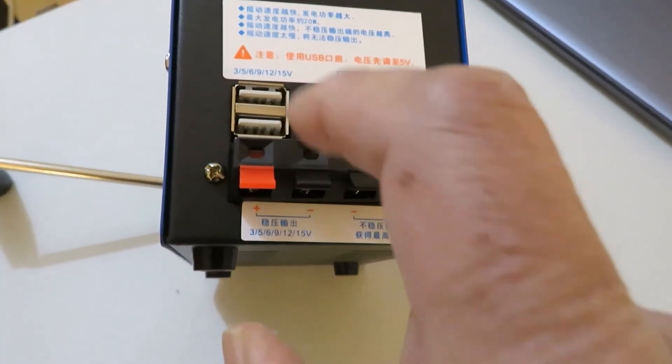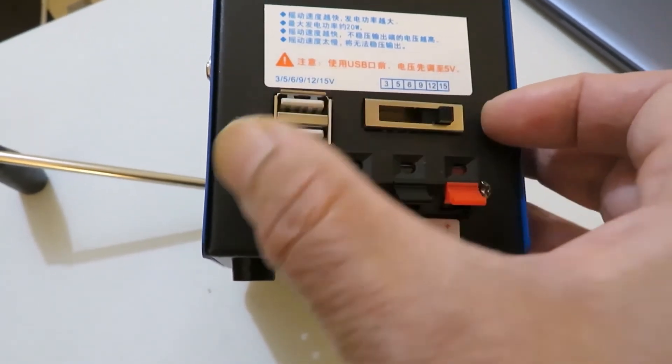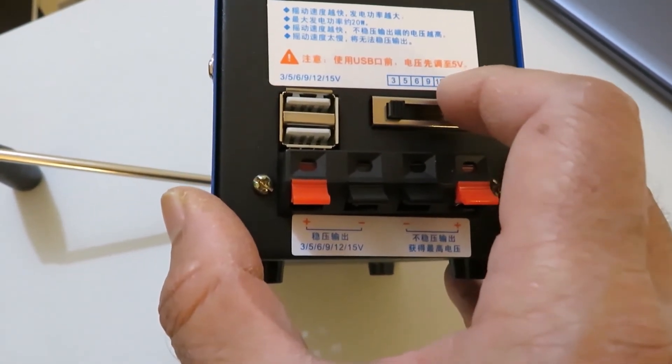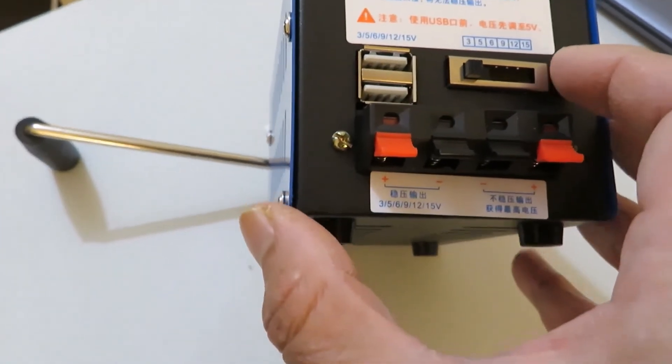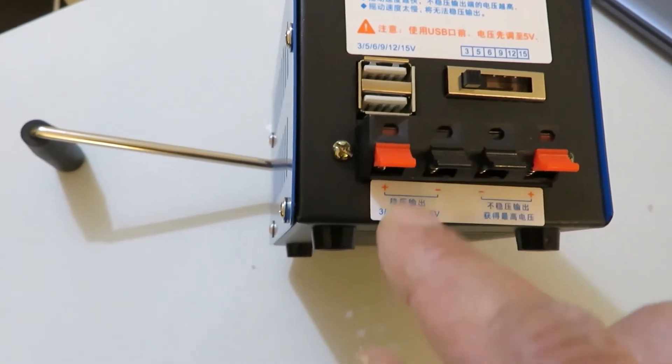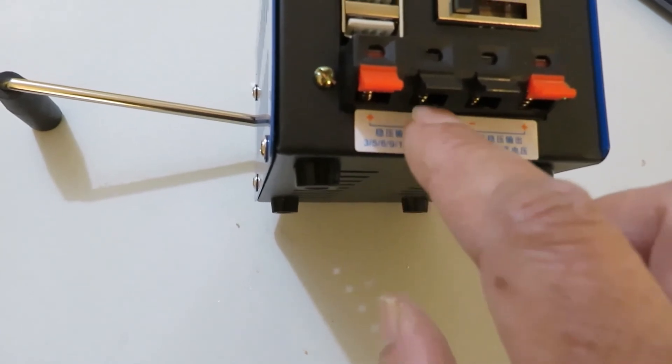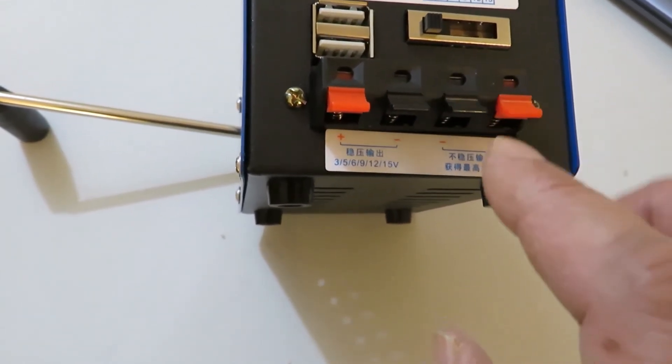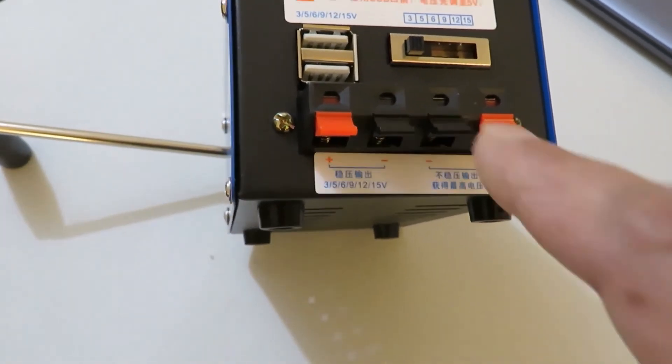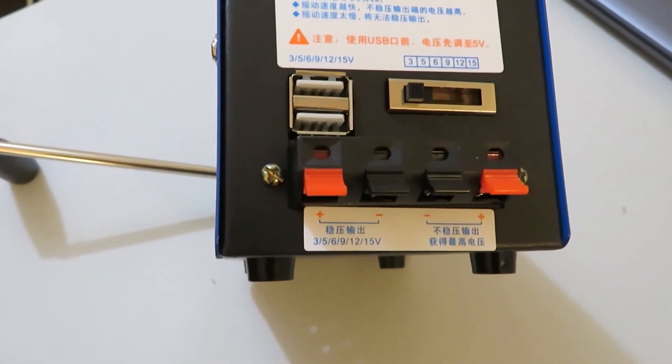I am zooming in on the front side or power connector side. As you can see, there are two USB ports for 5-volt output to charge cell phones or flashlights. The sliding switch selects the voltage output. On the bottom there are four terminals: two for the regulated output (you can set the voltage by the sliding switch - 3V, 5V, 12V, 15V), and the other two terminals are directly connected to the generator output, therefore the voltage is unregulated.